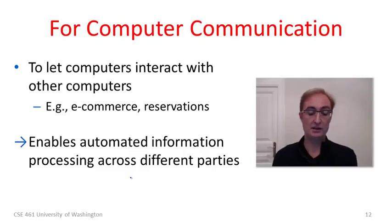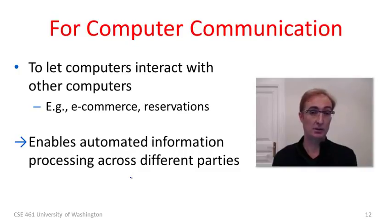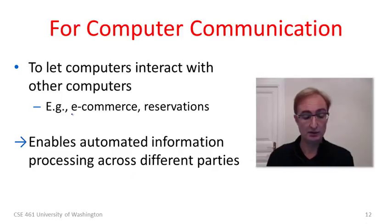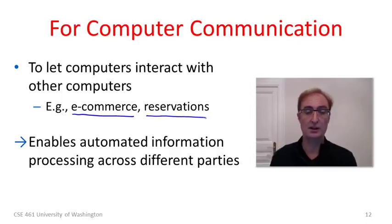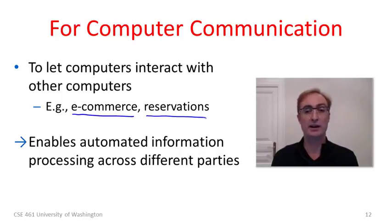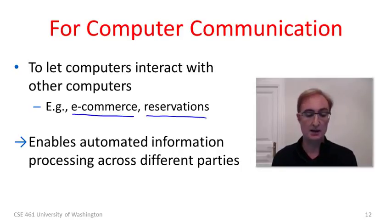Another key advantage of networks is communication between computers — letting computers interact with other computers rather than people communicating with people. We do this when buying something over the internet with e-commerce, or performing other transactions like making a reservation. Think of something like high-frequency trading, where many computers are automatically talking to one another and making decisions. Computer-to-computer communication enables automated information processing across different parties.